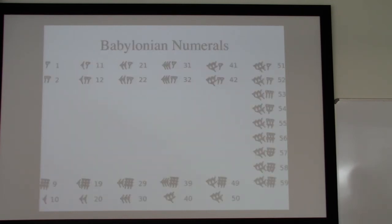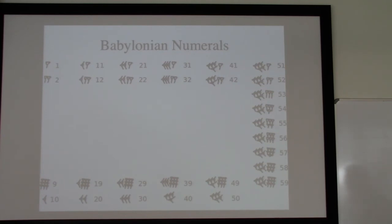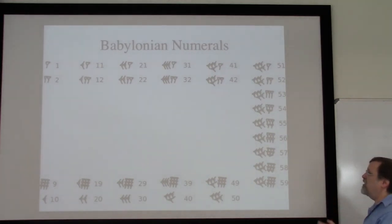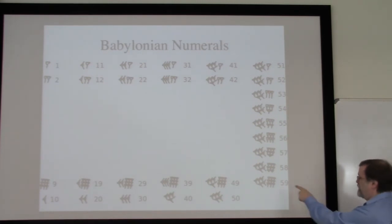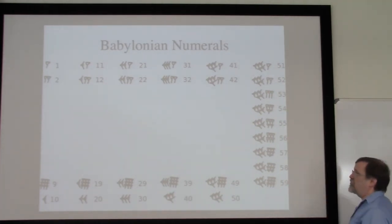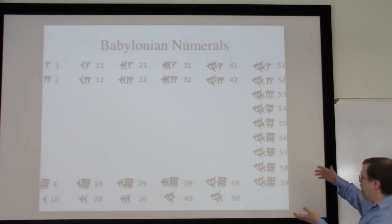We have one more number system to take a look at — slightly more complex. These are the Babylonian numbers — the Babylonian number system. Babylonian numbers work off of a base 60, and it is a positional notation. Each digit position needs to include one of the numbers from 1 up to 59. They don't have a symbol for 60 and don't really have a symbol for zero, which causes them some problems, but they do use all the numbers from 1 to 59.